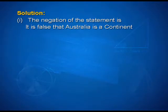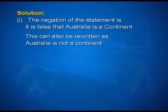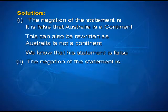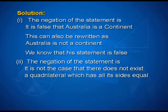Write the negation of the following statements and check whether the resulting statements are true. First: Australia is a continent. Second: there does not exist a quadrilateral which has all its sides equal. Third: every natural number is greater than 0. Fourth: the sum of 3 and 4 is 9.